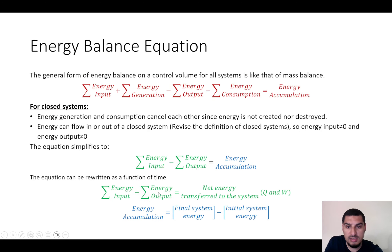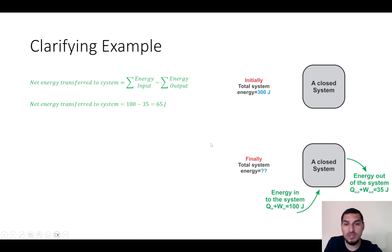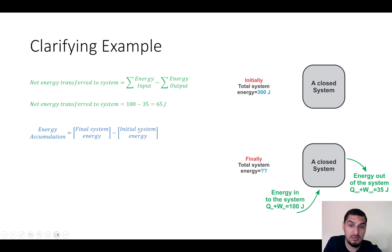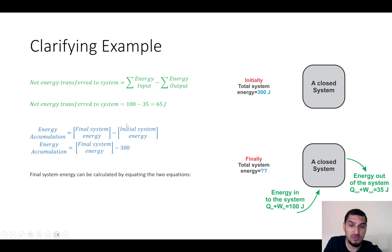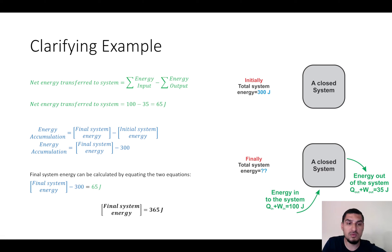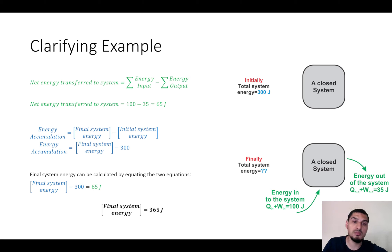Going back to the equation: energy input minus energy output equals accumulation. The accumulation is final energy minus initial energy. The initial energy is 300 joules, so: final system energy minus 300 equals 65, giving a final energy of 365 joules. This example is straightforward, but going through each step clarifies what we mean by initial energy, final energy, energy going into the system, and energy going out.